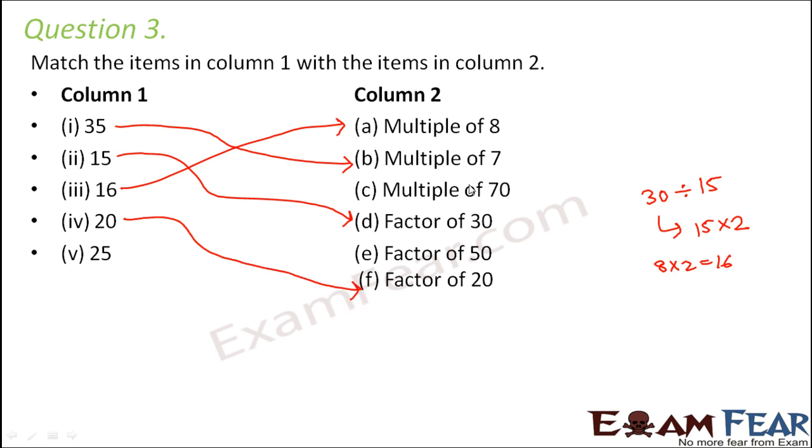25 is a multiple of 70. No, not possible. Again, 25 is a factor of 50. Yes, that can happen. That is because 50 divided by 25 is equal to 2. So 50 can be written as 25 into 2. So 25 is a factor of 50.